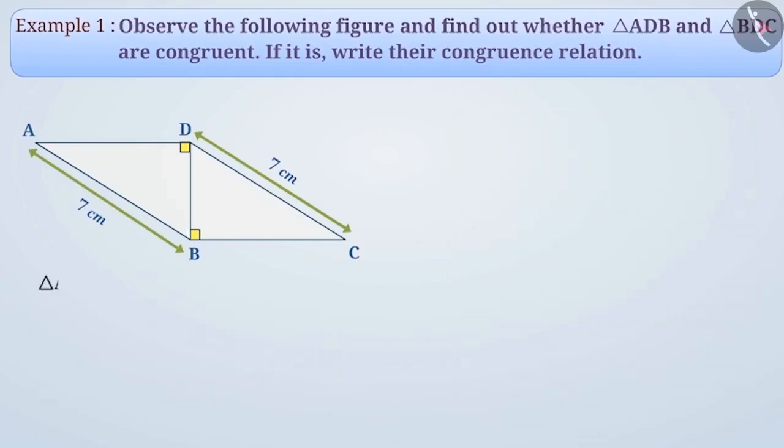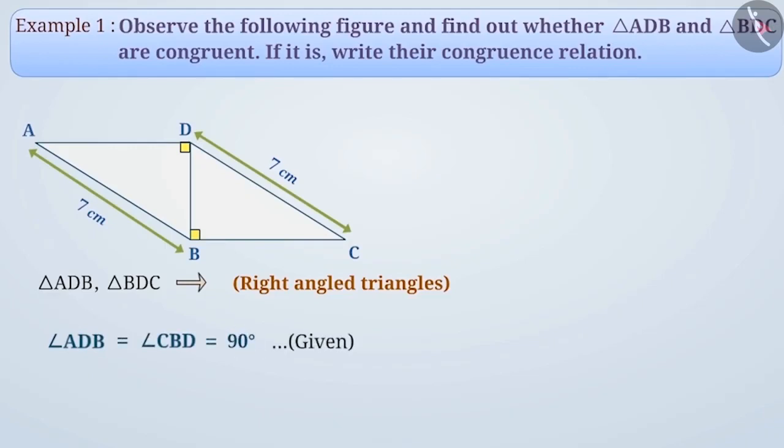In the given figure, both triangle ADB and triangle BDC are right angled triangles in which we are given angle ADB is equal to angle CBD is equal to 90 degrees. At the same time, we have also been given that hypotenuse AB of triangle ADB and the hypotenuse CD of triangle BDC both measure 7 cm.